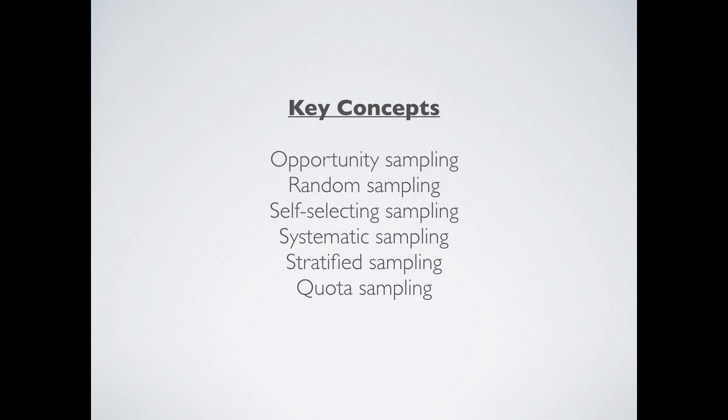So those are the six different types of sampling strategy: opportunity, random, self-selection, systematic, stratified, and quota. If you can understand these six types and know how to apply them to your psychology research, then we're off to a winner. That's everything for this video — thanks so much for watching. In our next video, we're going to be looking at the experimental method. Until then, hope you're well, take it easy, and we'll see you next time.